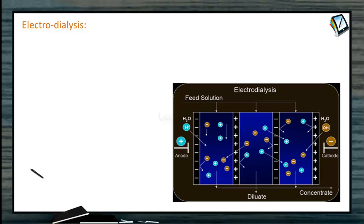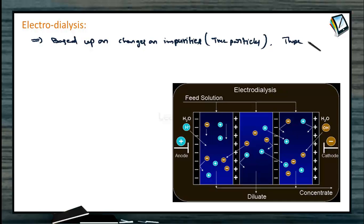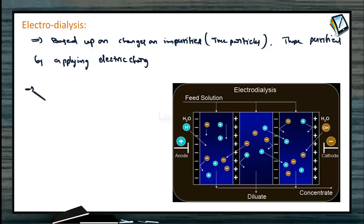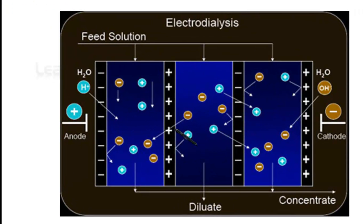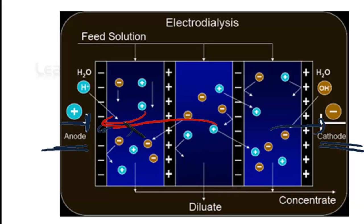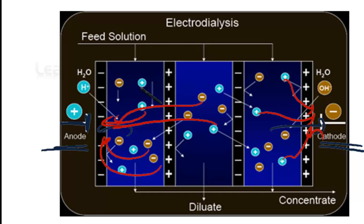The next method is electrodialysis. This uses the same principle as dialysis, but is based upon the charges present on the impurities or true solutions. These are purified by applying electric charge. As seen in the picture, the colloidal solution is separated by membranes. When you apply an electric charge via electrodes on both sides, the electrolytes present as impurities are attracted. All negative charges are attracted towards the anode, and positive charges are attracted towards the cathode. When the electric charge is applied, these are attracted toward each other and diffuse through the membrane.